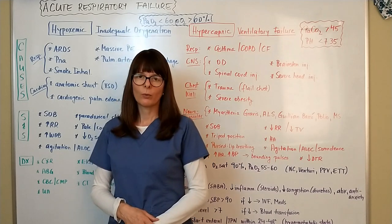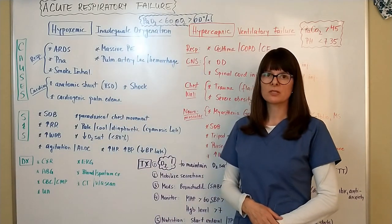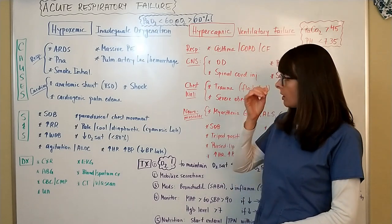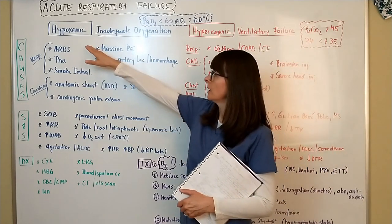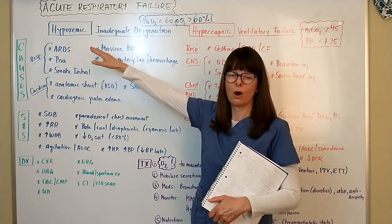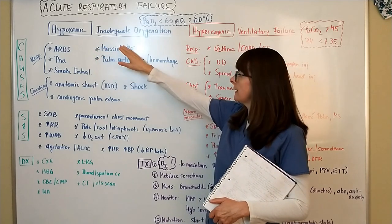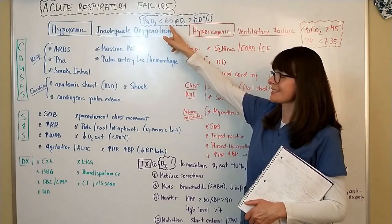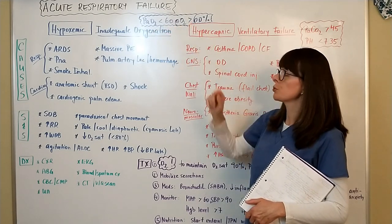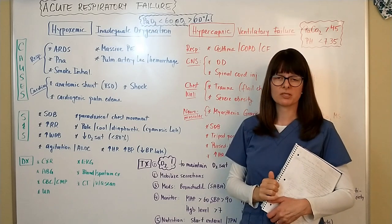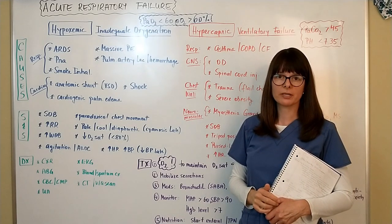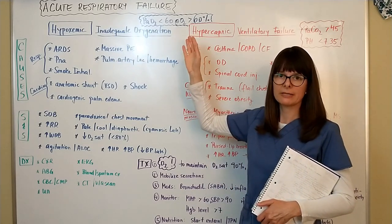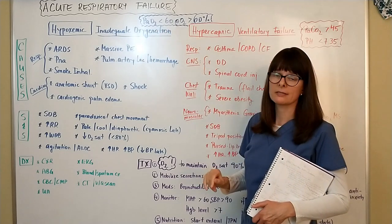When we talk about acute respiratory failure we always have to distinguish between two causes. Number one is hypoxemic respiratory failure, meaning there is low oxygen in the blood and inadequate oxygenation, usually evident by a PaO2 less than 60 when the patient is receiving O2 greater than 60 percent. Remember that room air has 21 percent oxygen, so this patient is in a significant amount of supplemental oxygen yet they still have a low PaO2.